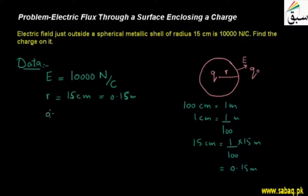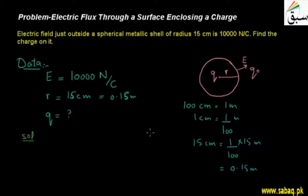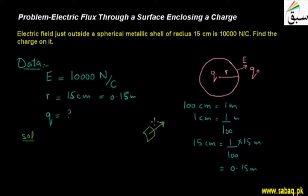What we need to find is the charge. Now let's see how to arrive at the solution. If I take a small area element of this shell and make a small square-shaped area, the unit normal vector of this area is in the radially outward direction.